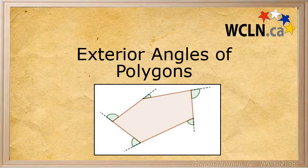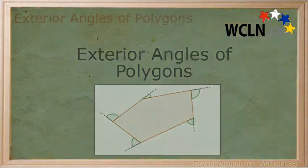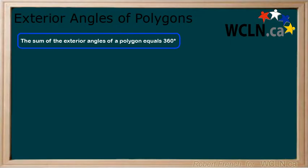In this tutorial, we will be learning about exterior angles of polygons. The first thing we will learn is that the sum of the exterior angles of a polygon equals 360 degrees.